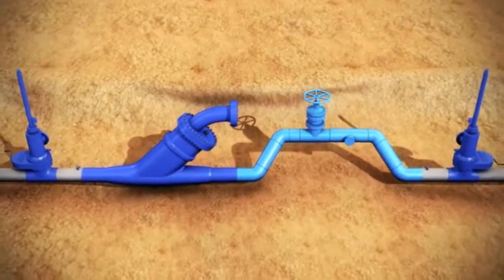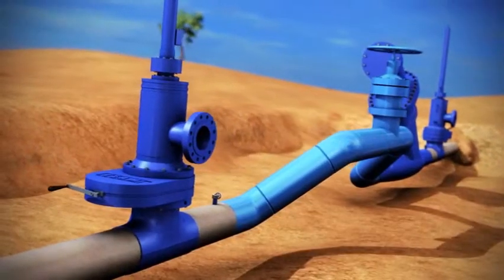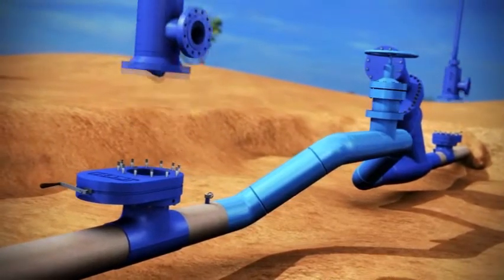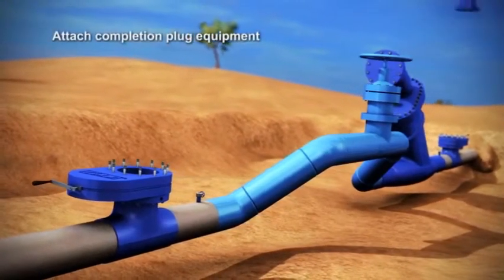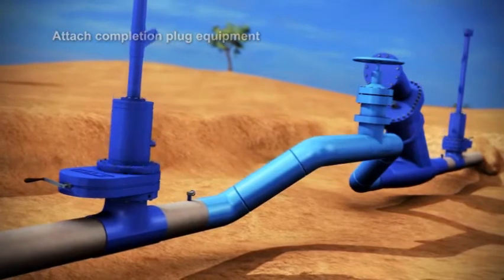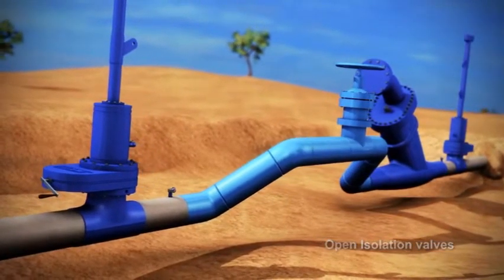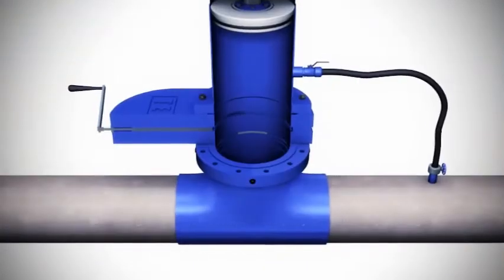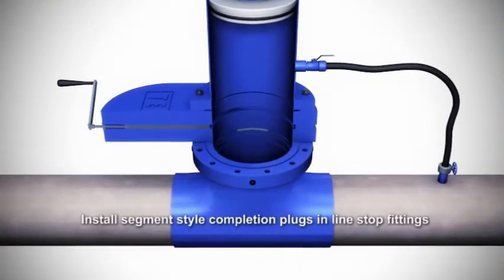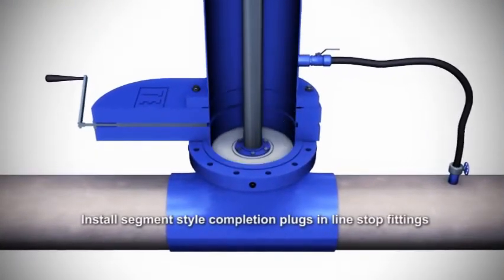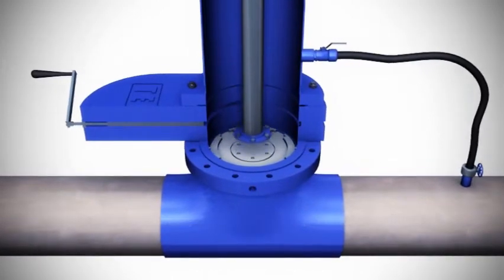To complete the line stop process, the hot tap machine with completion plug assembly is attached to the isolation valves. The pressure is equalized and the isolation valves are opened. The segment style completion plugs are lowered to the set point in the line stop fitting. Notice the metal-to-metal stop with O-ring seal.